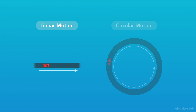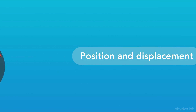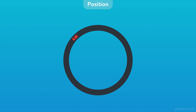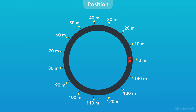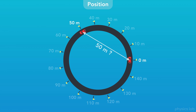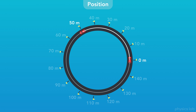Now let's take a look at how these same things apply to circular motion, starting with position and displacement. We'll use a car driving around a circular track as our example. We can place flags at equal distances along the road — let's put a flag every 10 meters. The 50-meter flag is placed at an arc length of 50 meters, meaning the length of the curved line between the two flags that follows the path of the car, which is part of the circumference of a circle. A section of a circumference is called an arc, and its length is the arc length.